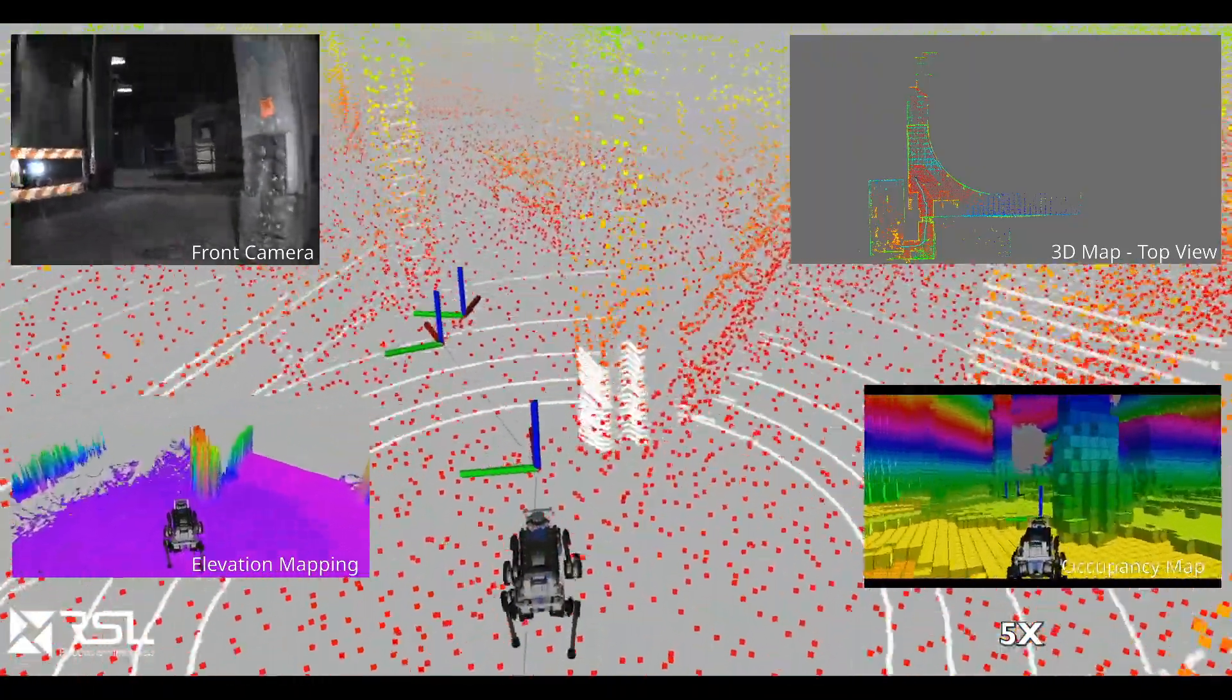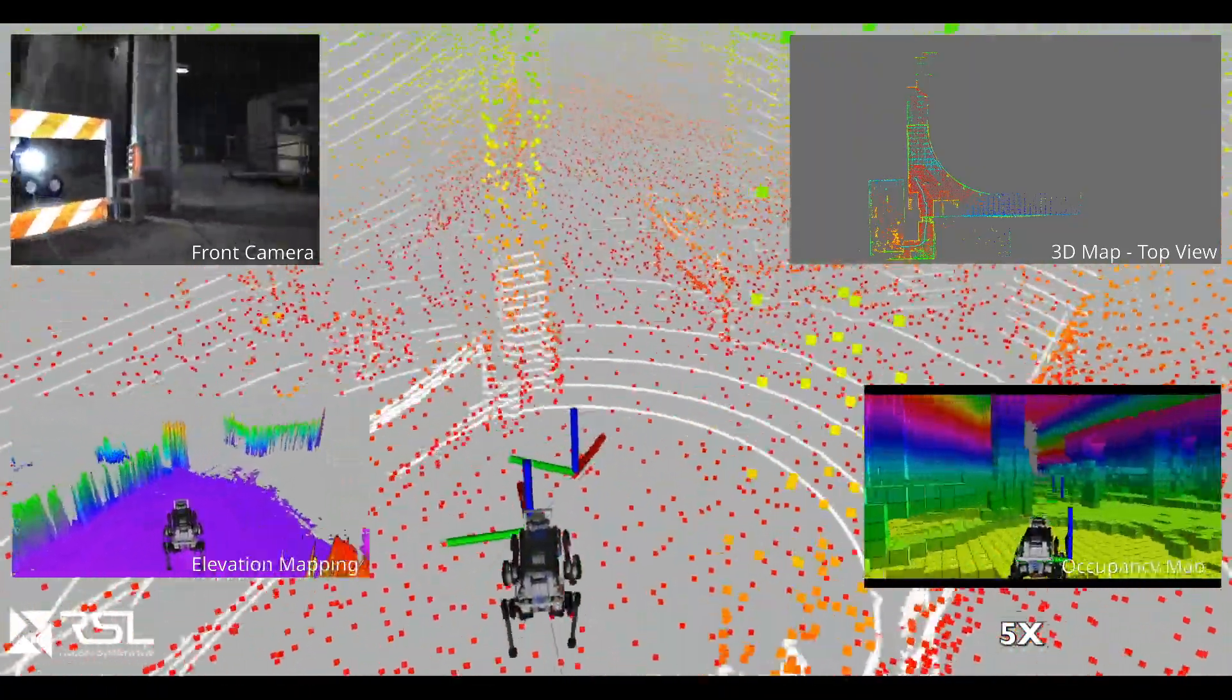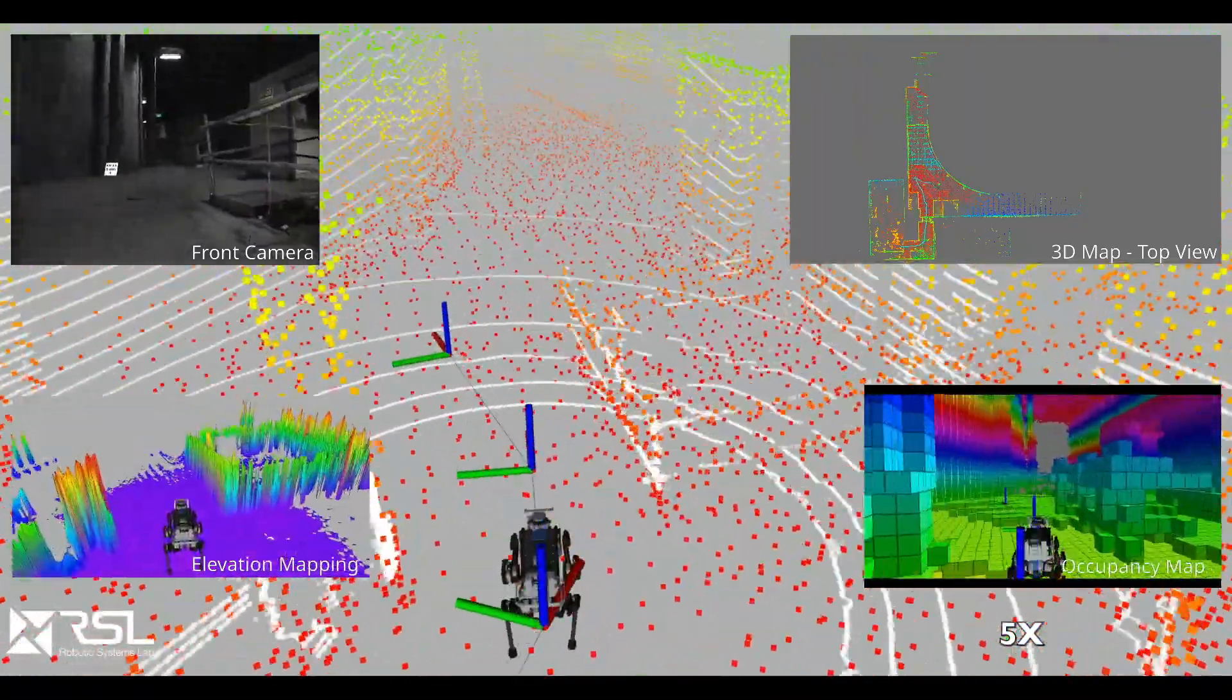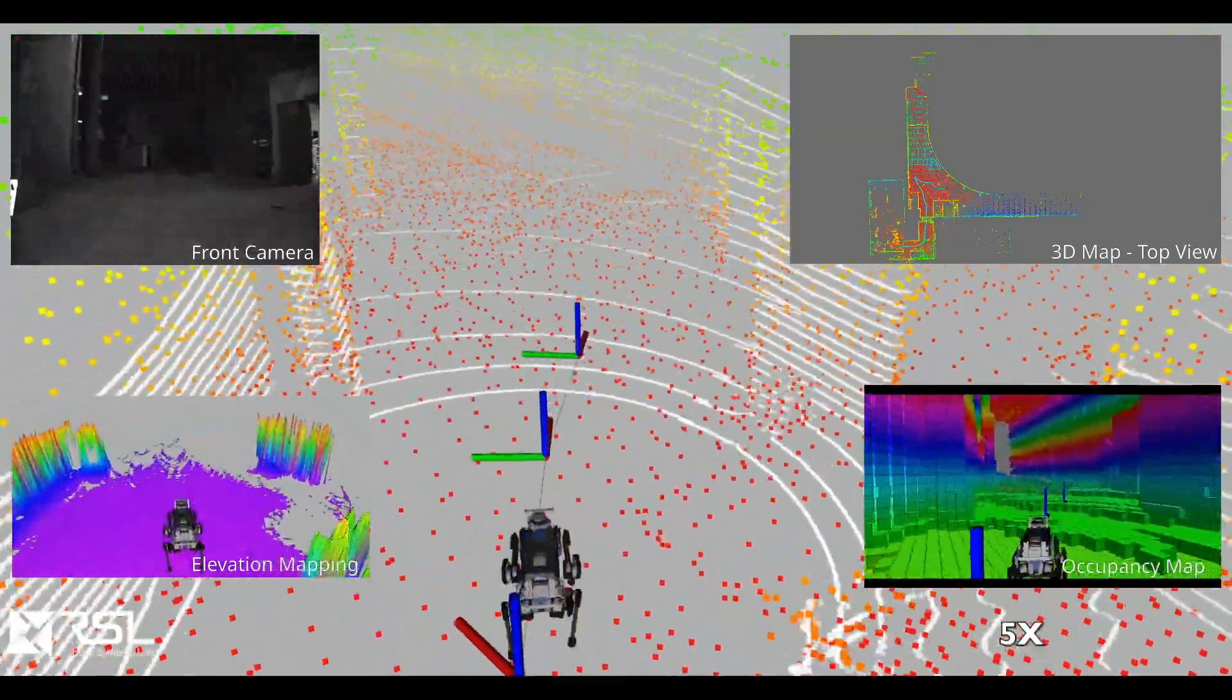The laser sensors are used to build a 3D map of the environment for navigation purposes as well as to evaluate the traversability of the terrain.